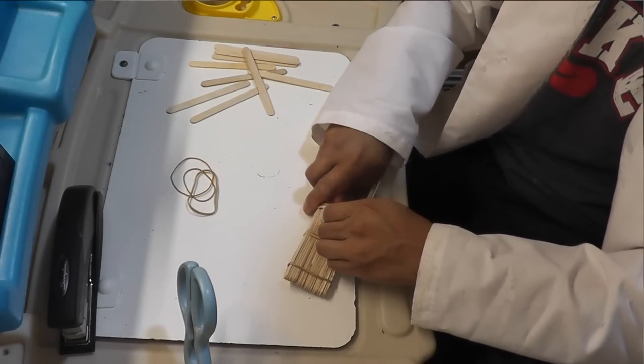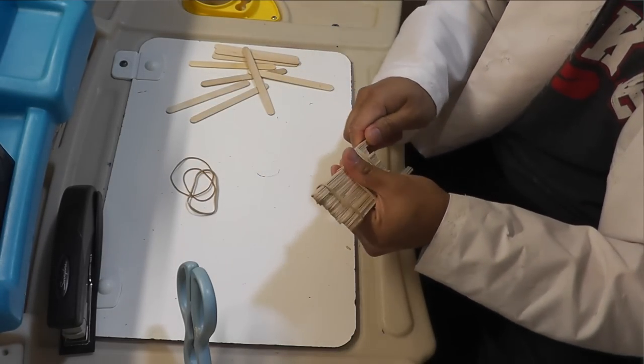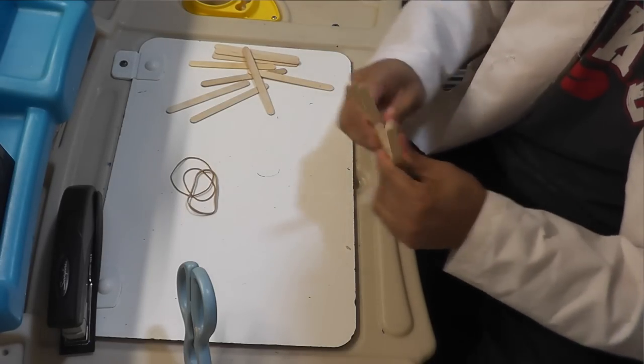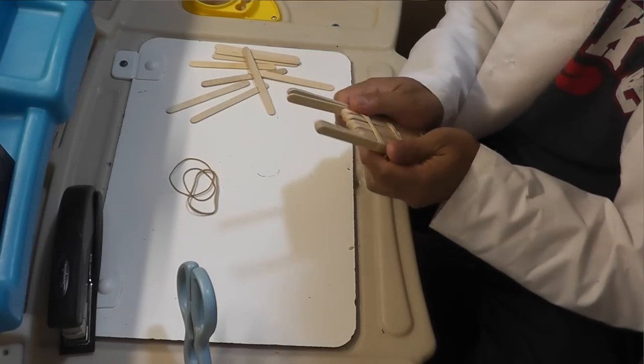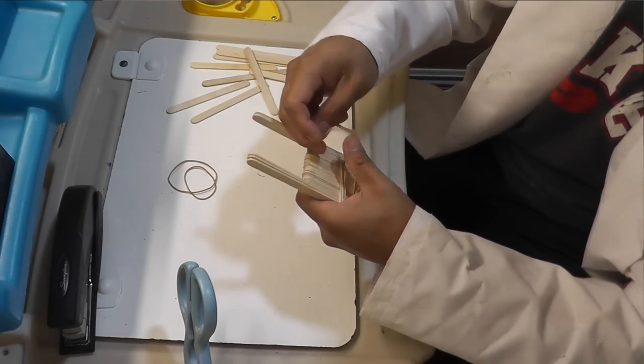Put the second one by inserting it like this. There you go. It looks like a speed boat now.